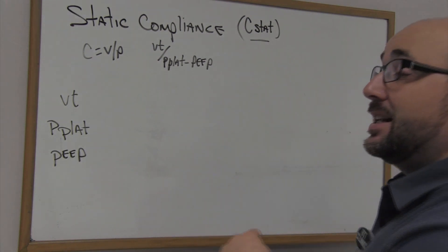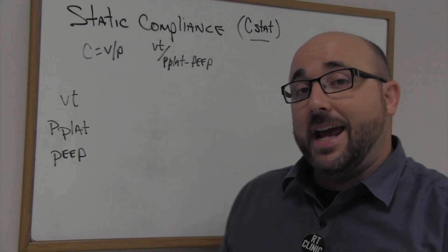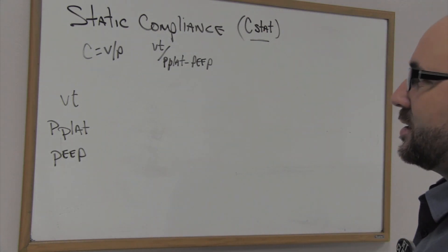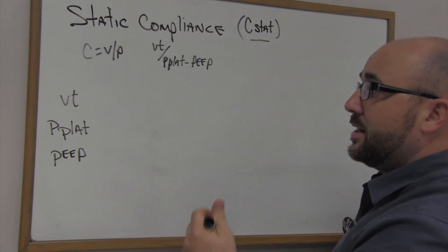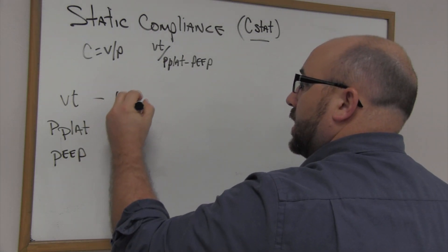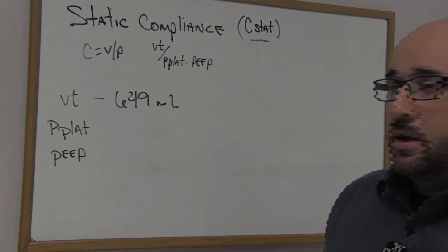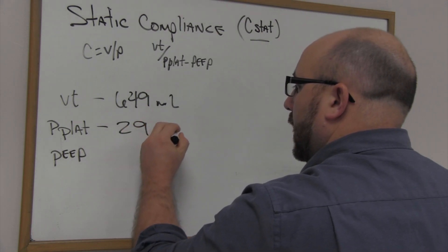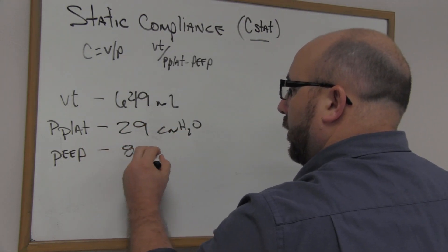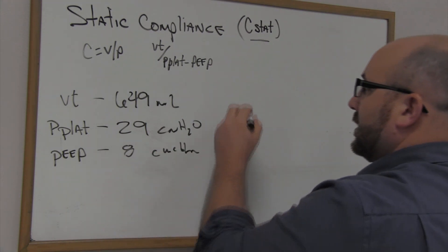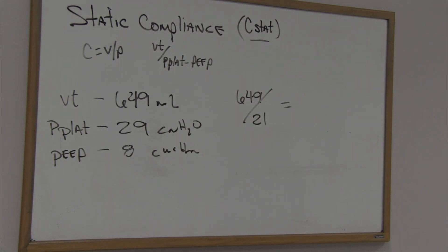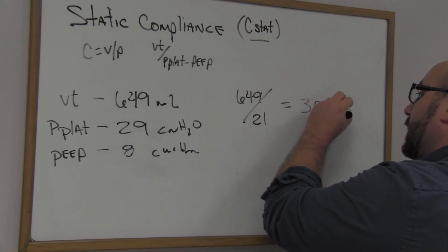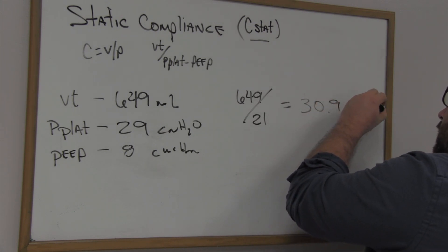For static compliance, the formula is: C-stat = tidal volume ÷ (plateau pressure − PEEP). For dynamic compliance it's tidal volume ÷ (PIP − PEEP), giving a bigger denominator and therefore a different value. Dynamic compliance can change quite a bit. On my test lung, I had a tidal volume of 649 mL, a plateau pressure of 29 cmH₂O, and a PEEP of 8 cmH₂O.